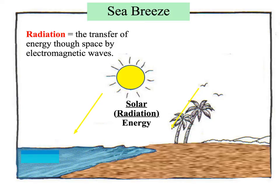As we know, the sun's energy travels to the Earth through space as radiation. Radiation is a transfer of energy through space by electromagnetic waves. And this radiation, when it touches the ground or the water, it changes into heat.